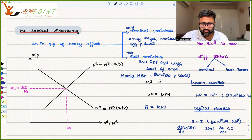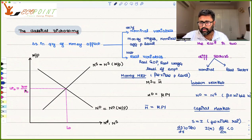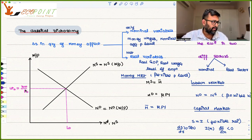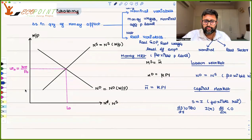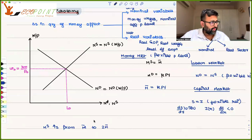Initially, the equilibrium is where demand for labor equals supply for labor, giving the equilibrium amount of labor and the equilibrium real wage W₀/P₀ — your initial nominal wages over initial price level. Now suppose money supply increases from M-bar to 2M-bar.